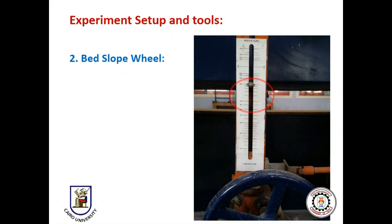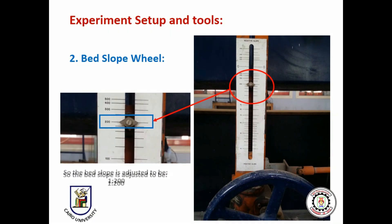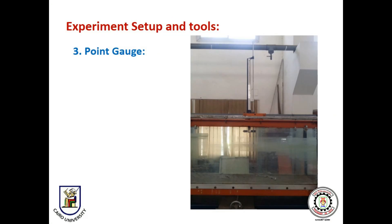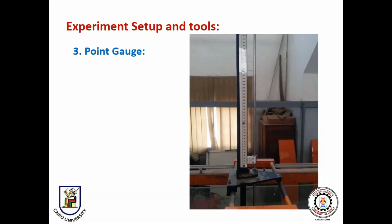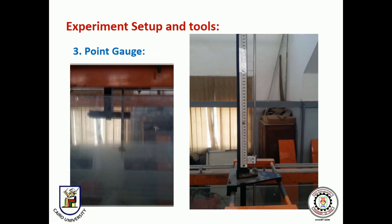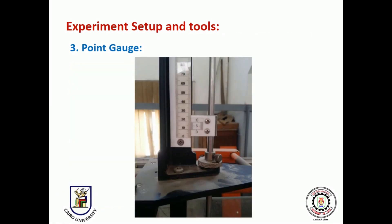Number 2: the bed slope wheel. This is the bed slope wheel by which we can control and adjust the bed slope of the channel. In our experiment, we adjust it to be 1 to 200. Number 3: the point gauge. The point gauge is used to determine the bed level and water level. When the pointing tip is on the water level, the level of water is then measured, and the same for the bed level. The reading is taken from the tall ruler on the left.